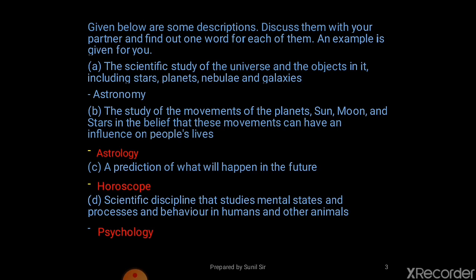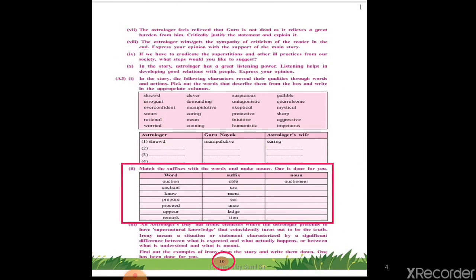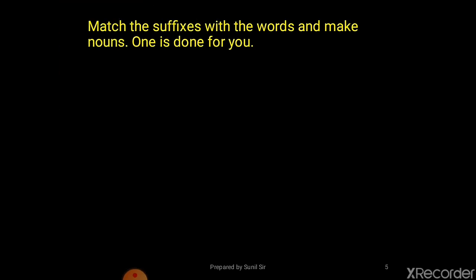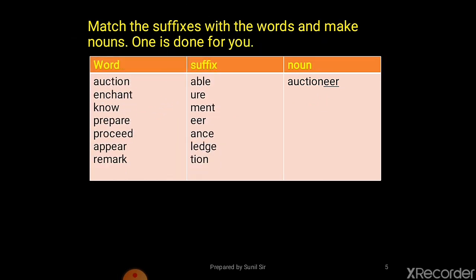Let's move to the next slide. Here you see a third question on page number 10. The question is: match the suffixes with the words and make nouns. Suffix means the letters that we add at the end of a word to make a meaningful word. For example, auction becomes auctioneer. In the same way we can add suffixes to other words — enchant becomes enchantment, and knowledge gains a suffix too.